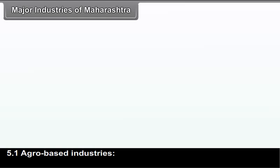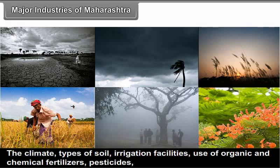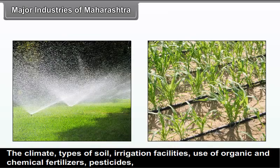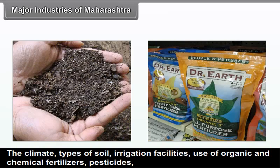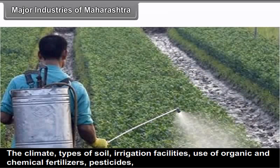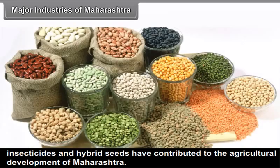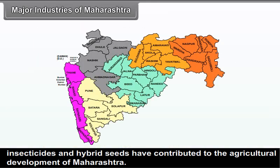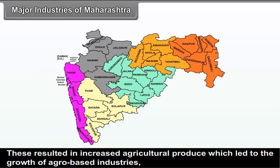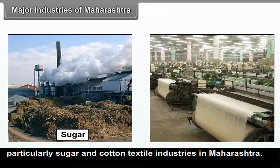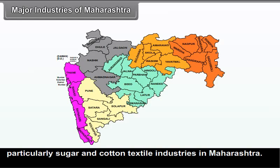The major industries of Maharashtra fall under agro-based industries. The climate, types of soil, irrigation facilities, use of organic and chemical fertilizers, pesticides, insecticides and hybrid seeds have contributed to the agricultural development of Maharashtra. These resulted in increased agricultural produce, which led to the growth of agro-based industries, particularly sugar and cotton textile industries in Maharashtra.